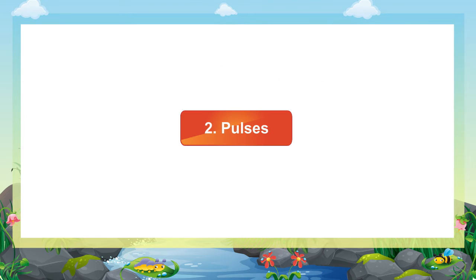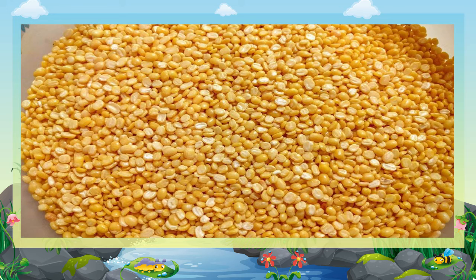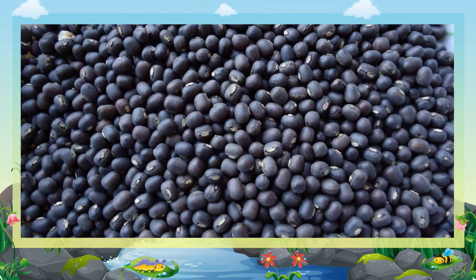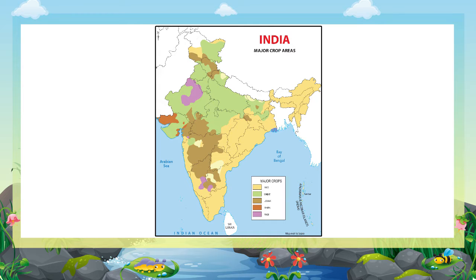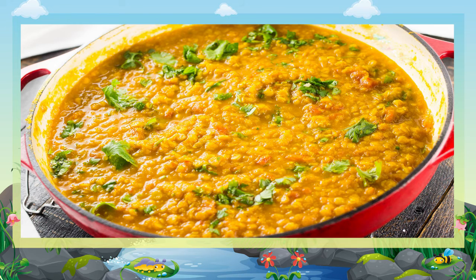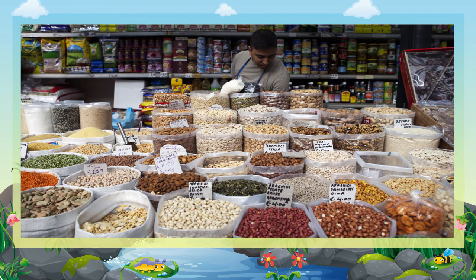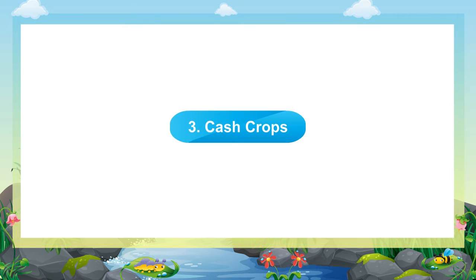Two: Pulses. Moong, masoor, urad, gram, and arhar are major pulses. Pulses are grown all over India. These are rich in protein and thus important for vegetarians. India is the largest producer and consumer of pulses in the world.